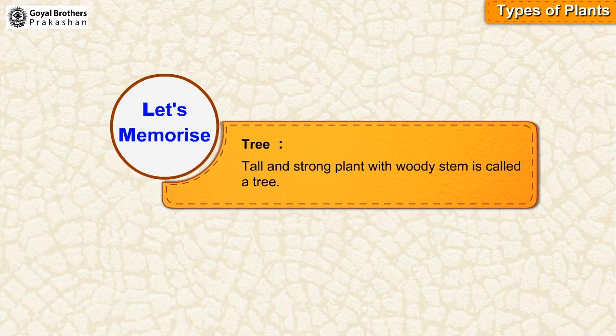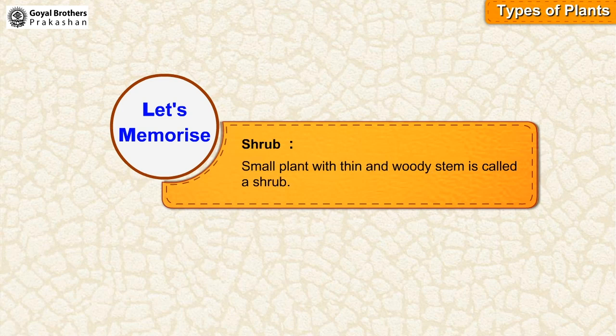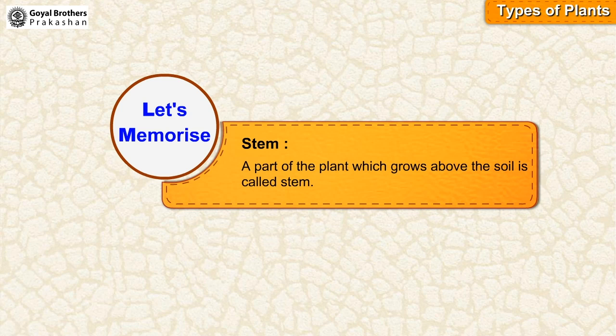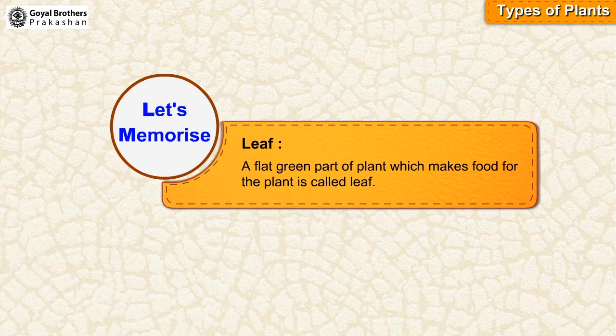Let's memorize. Tree — a tall and strong plant with a woody stem is called a tree. Shrub — a small plant with a thin and woody stem is called a shrub. Root — a part of the plant which grows in soil under the ground is called root. Stem — a part of the plant which grows above the soil is called stem. Leaf — a flat green part of a plant which makes food for the plant is called leaf.